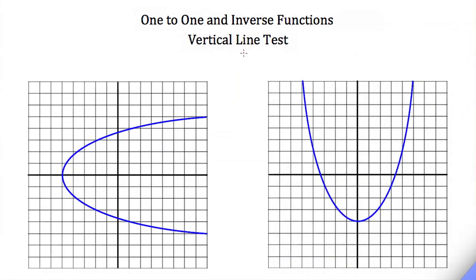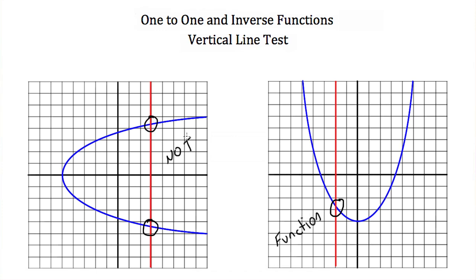You may remember the vertical line test. The vertical line test tells us that if we have a graph of a relationship, we can determine whether or not it is a function. If a vertical line intersects the graph in only one place, then it is a function. If it intersects the graph in more than one place, then it is not a function.